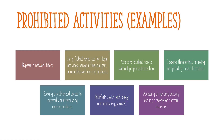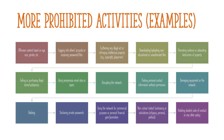Examples of unacceptable technology use include accessing unauthorized networks or accounts, introducing viruses or disrupting services, creating, storing, or distributing obscene or harassing content, engaging in discrimination or defamation, logging in as another user, violating intellectual property rights, using systems for personal profit or commercial gain, and soliciting for personal or political causes.